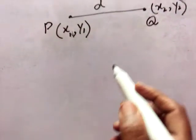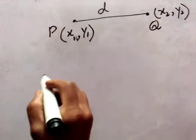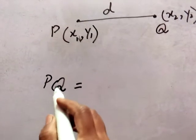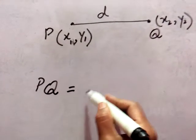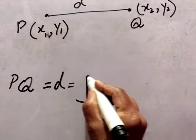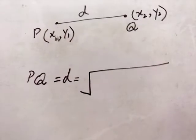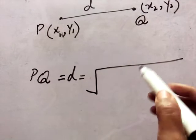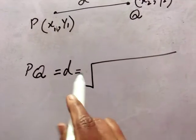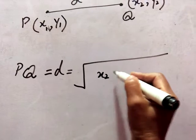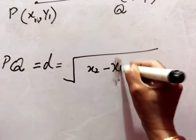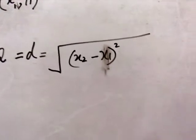Now we will find the distance between these two points using the distance formula. We write PQ — meaning these are two points and we are finding the distance between P and Q — which we can also write as D. We place a square root, and inside we put the coordinates: X2 minus X1 whole square, and